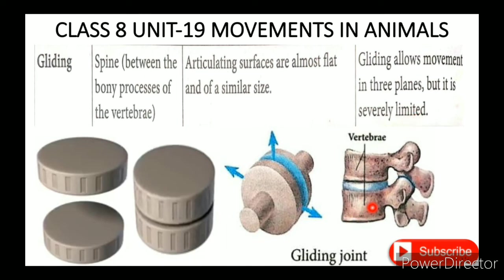Examples of gliding joints include the wrist, the spinal cord vertebrae, and other areas where small sliding movements occur.